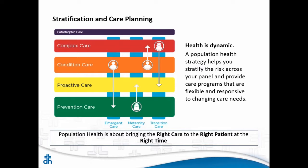Population health is about bringing the right care to the right patient at the right time. We call this our quilt slide — it's busy and complicated — but we start bucketing patients into complex care: those highest-risk really sick patients that need a lot of touch and care. Condition care is one step below that. Proactive care is things like: here's a list of your 50-year-olds who haven't had a colonoscopy, or your women who need mammograms — providing those things out to providers.